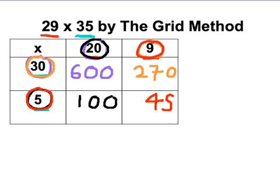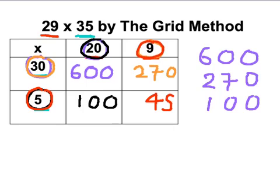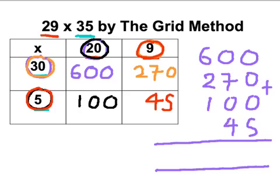And then I just need to add them all together to get a final answer. So I just do a traditional sum. If I line them up: 600, 270, 100, and 45. I'll put my plus sign on, and then I just add down the columns. So if I do the units: 0, 0, 0, and 5 is 5.